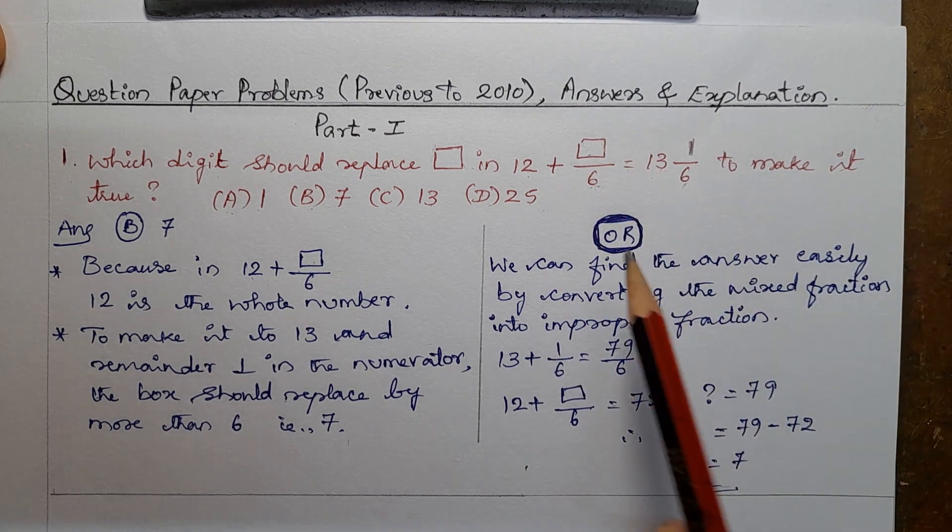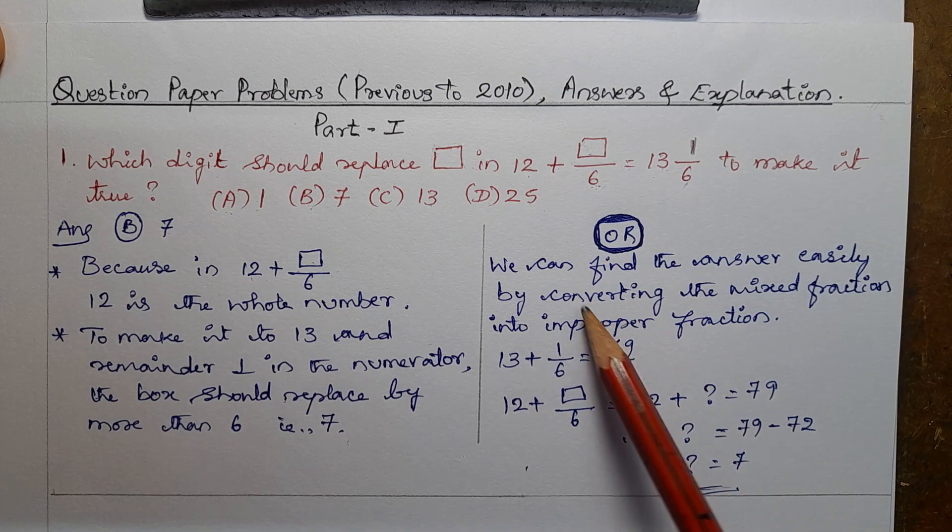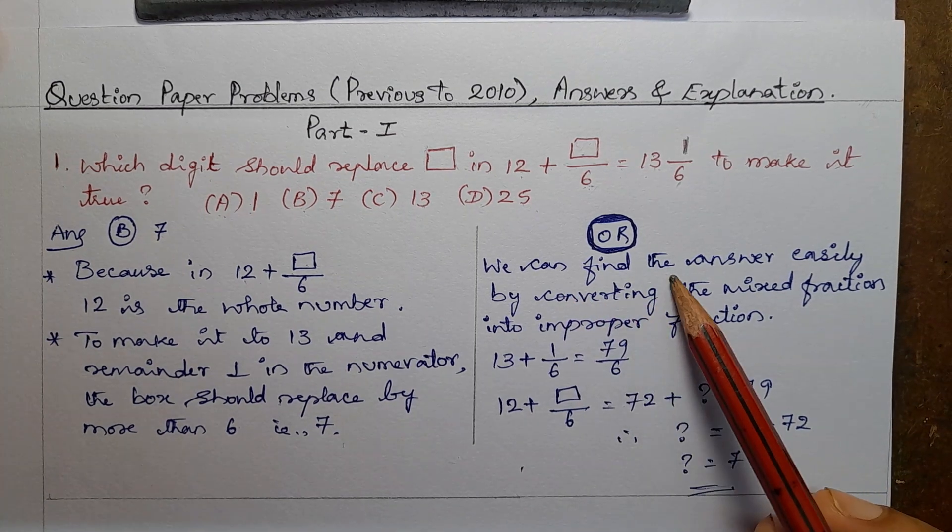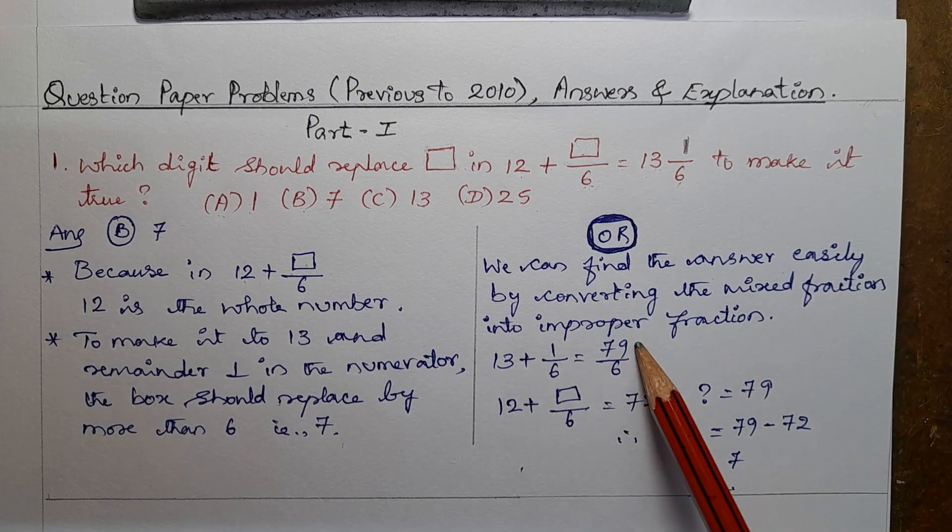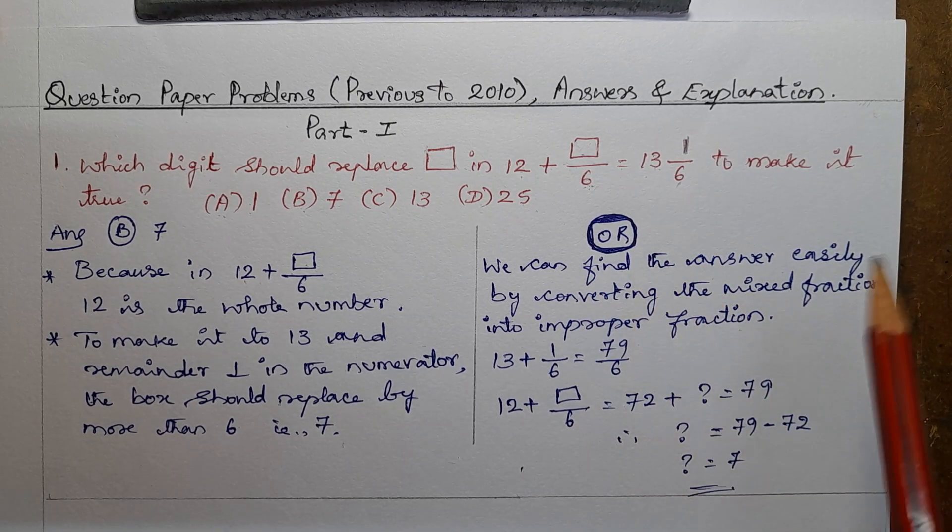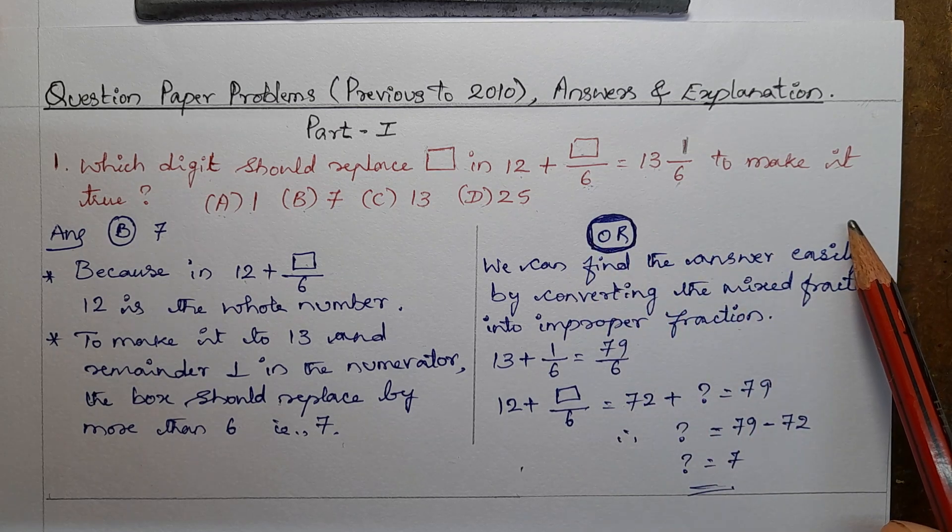So this is one method, and another method is we can find the answer easily by converting the mixed fraction into improper fraction. So easiest method, converting the mixed fraction into improper fraction.